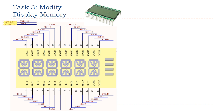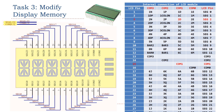In Task 3, the software driver needs to modify the display memory. The key question is: to turn on a specific segment, which bit should be set to 1 in the display memory? The LCD glass has a total of 28 pins, including 24 segment pins and 4 COM pins. This table shows how each segment is controlled by the LCD's pins. For example, segment 2D — segment D at the second display position — is controlled by LCD pin 3 and LCD pin 15.